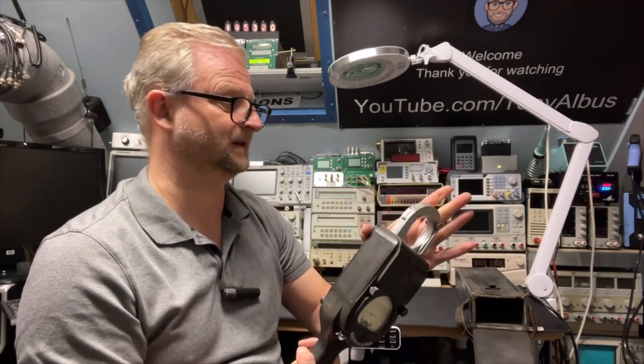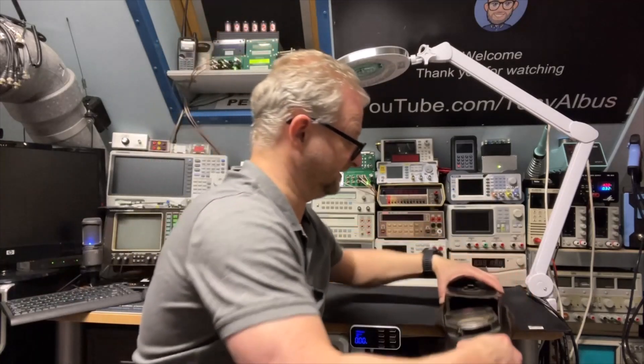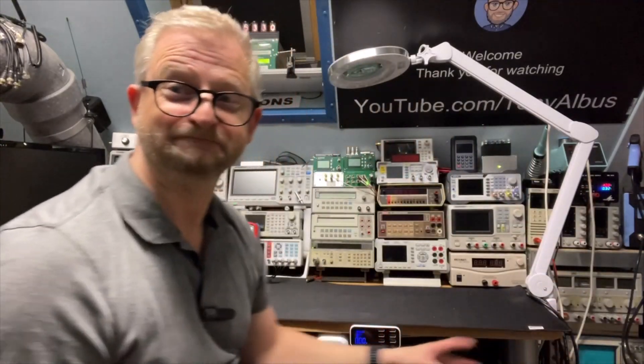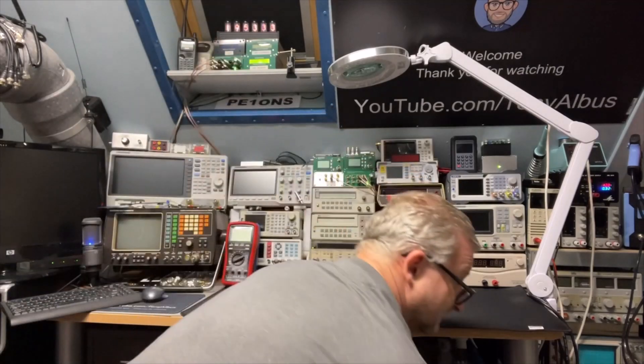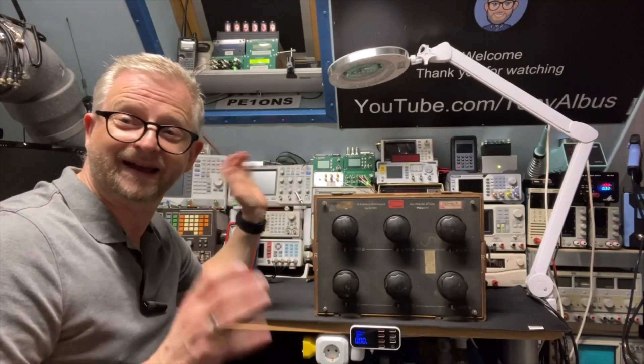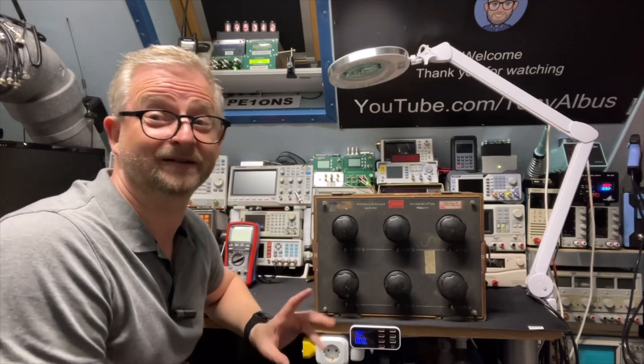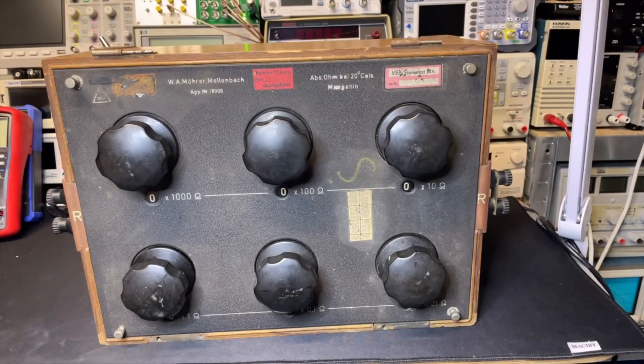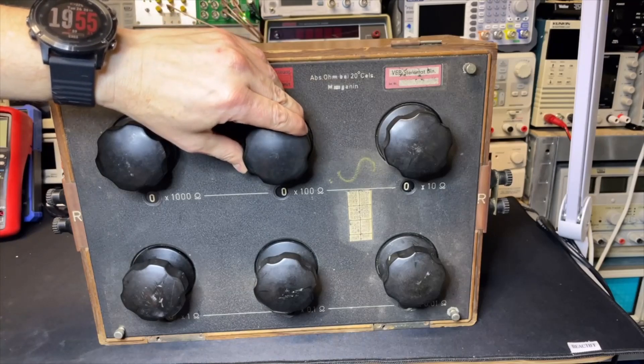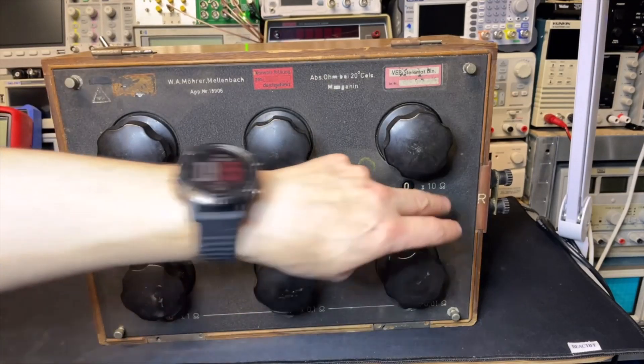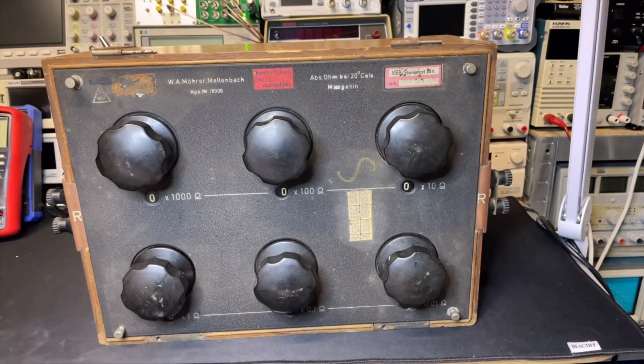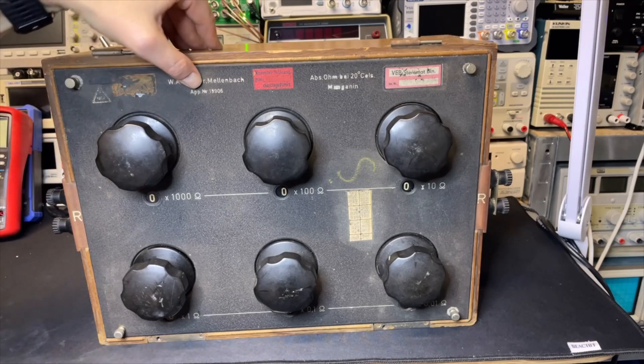But kind of cool. And talking about old decades or Wheatstone bridges, I have found another decade that I cannot find anything on the internet. So I don't know, maybe you can help me with that. Let's have a closer look. So here it is and it actually looks quite cool. You can turn from zero to 10 and no, 1000 ohms, 100 ohms, 10, 1, 0.1, 0.01 even.